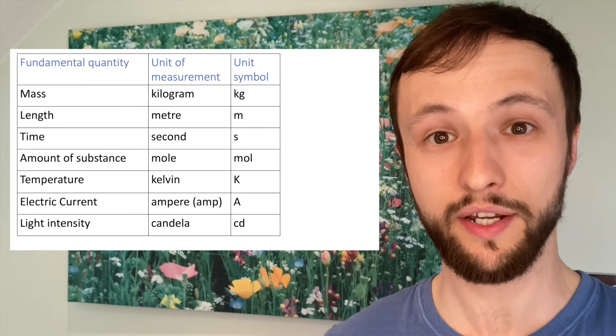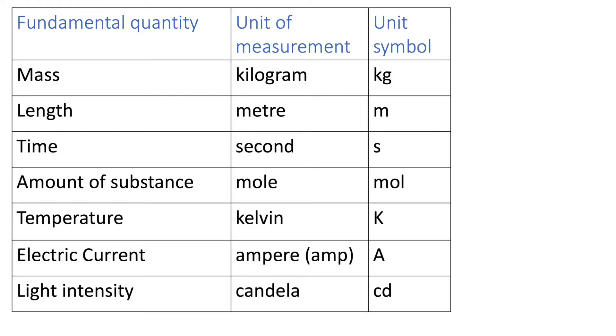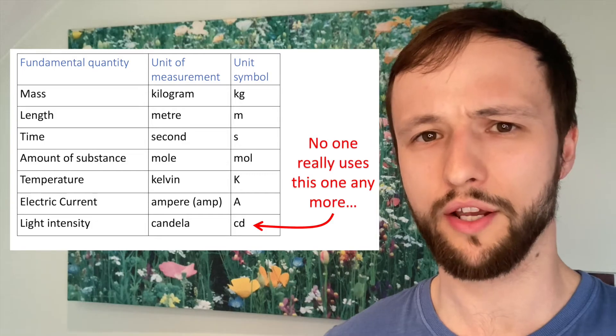Here they are, the seven base SI units. The unit for mass is the kilogram, for length it's the meter, for time it's the second, amount of substance it's the mole, for temperature it's kelvin, electric current ampere or just amp, and for light intensity the candela, although we don't really use that last one anymore.